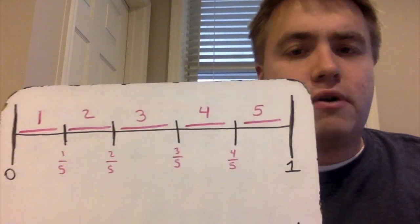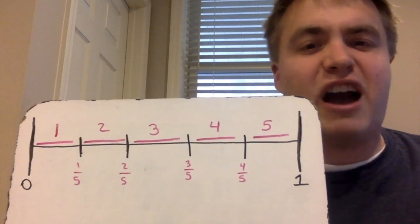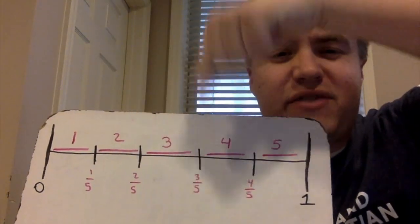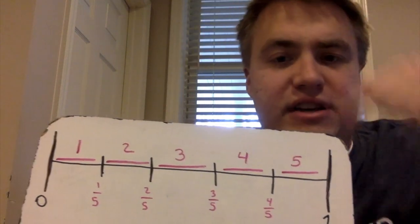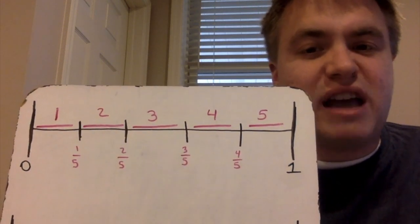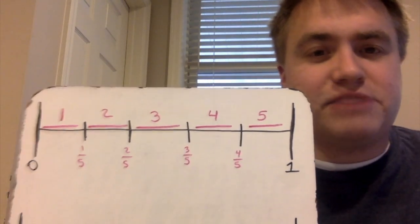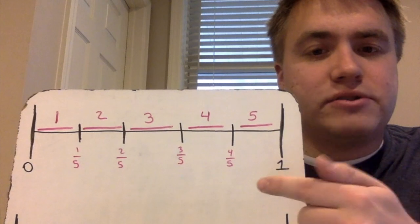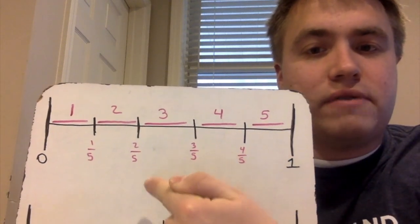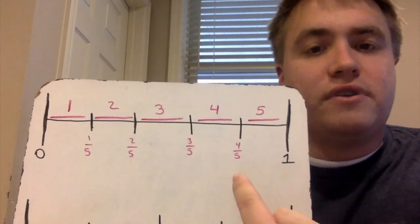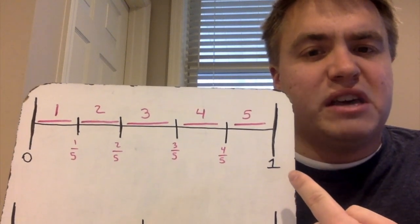Hopefully you had a chance to find how many equal parts there were. I went through and marked how many equal parts I found — I found five equal parts. Notice I didn't just count the dash marks, which would have given me four; I counted the spaces in between the dash marks and got five equal parts. That means the denominator for every one of these is going to be five, and I go from zero to one-fifth, two-fifths, three-fifths, four-fifths. This would also be five-fifths, but we know that five-fifths equals one.